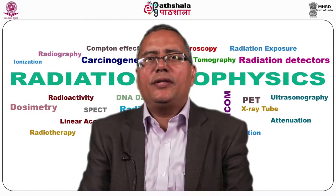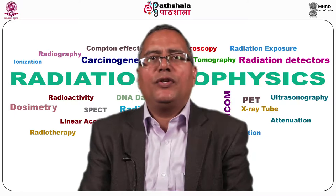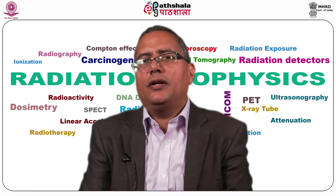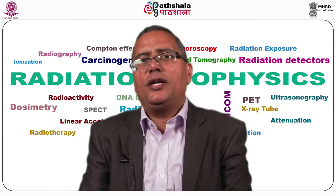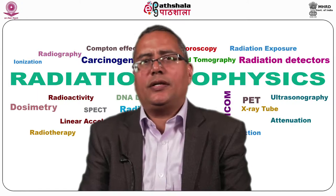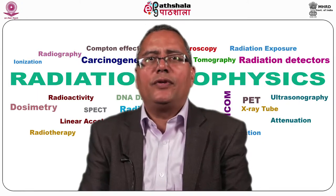To summarize, radiation detection and measurement is a sine qua non for safe and efficient application of ionizing radiation in various aspects of human activity. There is no one radiation detector useful for all types of applications. Depending upon their properties, several types of radiation detectors or dosimeters have been developed: ionization-based gaseous detectors, semiconductors, scintillator-based solid-state detectors, thermal and optical luminescence-based detectors, chemical detectors and dosimeters, and gel-based three-dimensional dosimeters — all finding application in diverse fields such as medicine, nuclear power, and research. Thank you.